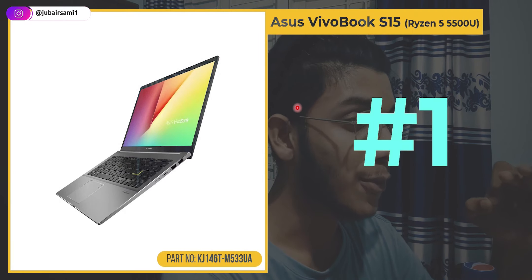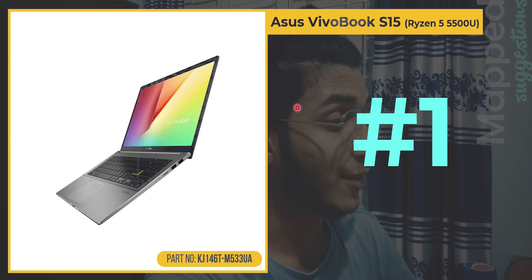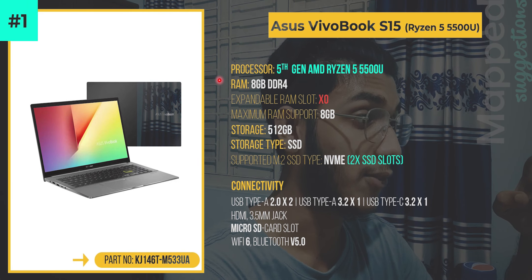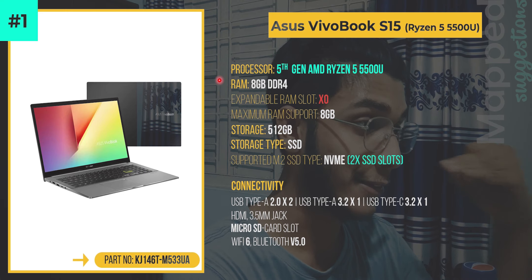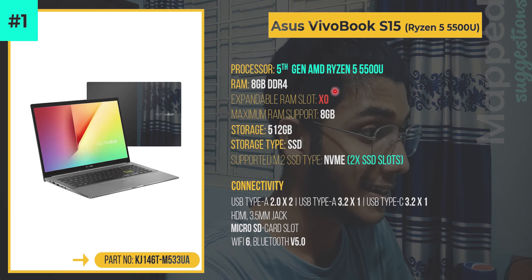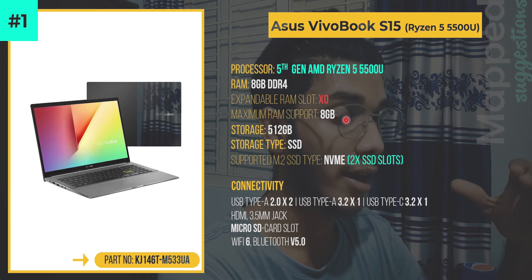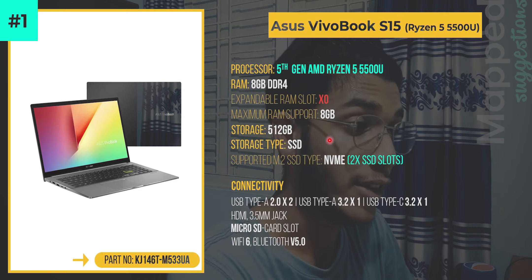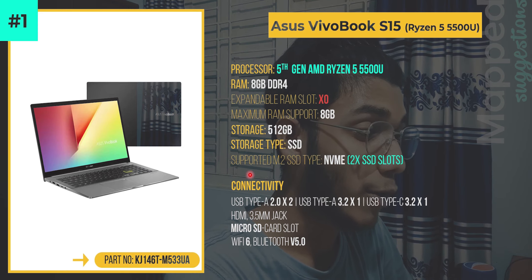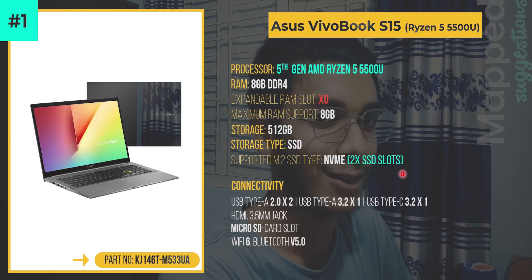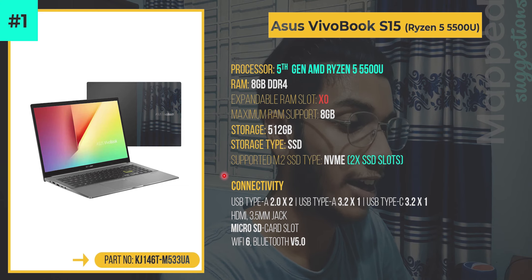Finally, suggestion number one, the top position, is the ASUS VivoBook S15 with its AMD Ryzen 5 5500U processor — a 5th generation AMD Ryzen 5 5500U. It has 8 gigabyte DDR4 RAM. However, the RAM is soldered so it cannot be replaced. For storage, it has a 512 gigabyte NVMe SSD, and notably it has 2x SSD slots, which is a good advantage.